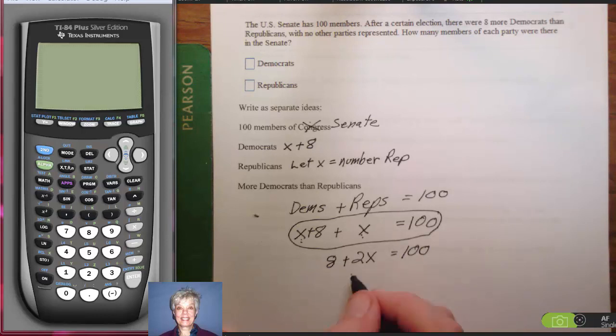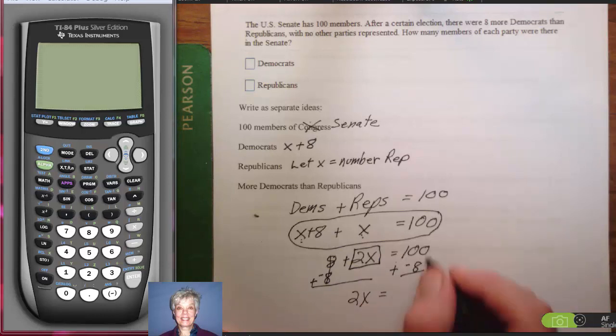And then, the first thing I'm going to do is get the X term, the variable term by itself. This 8 is added on to it, so I'm going to add the opposite of 8 to both sides of the equation. 8 plus negative 8 is 0, leaving me with 2X. 100 plus negative 8 is 92.